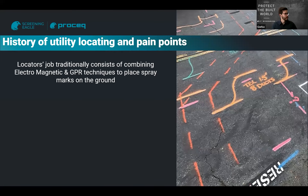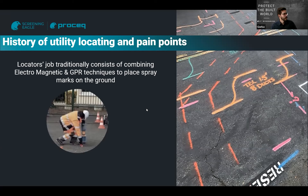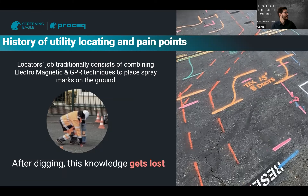Looking at the history of utility locating: there are two main non-destructive techniques — electromagnetic locators and GPR. Typically, the job of a locator consists of combining these two techniques and placing spray marks on the ground. A person places those spray marks on the floor with technique one and technique two, and then the excavator comes and digs. After digging, this knowledge gets lost. That is the status quo of how the industry works — it produces spray marks on the ground, and after digging, the knowledge is gone.